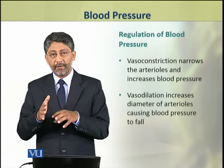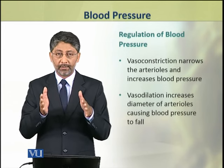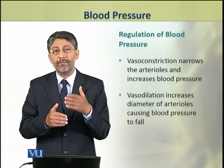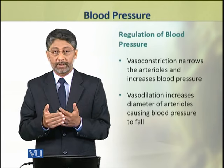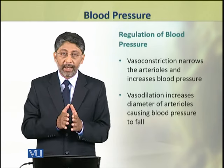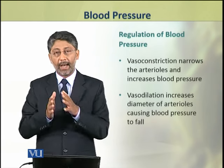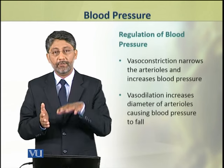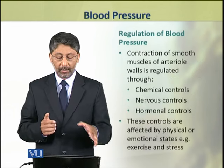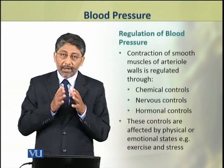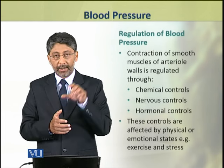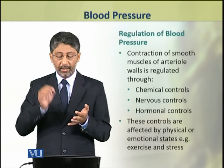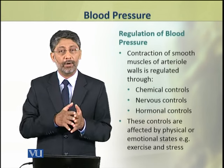Vasoconstriction causes the lumen of arterioles to narrow, which increases blood pressure. Vasodilation increases the diameter of arterioles and as a result, blood pressure falls. The contraction of smooth muscles of arteriole walls is regulated through chemical, nervous, and hormonal controls.